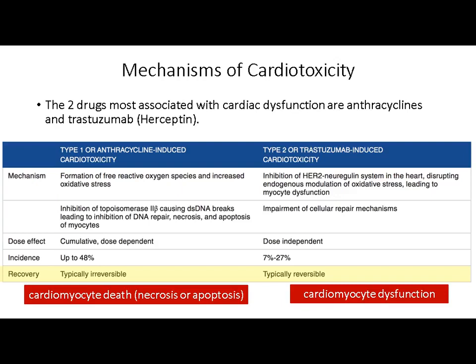We have different types of cardiotoxicity. Type 1 cardiotoxicity is induced by anthracycline. It is cumulative and dose-dependent with a very high incidence of cardiotoxicity rates. This kind of cardiotoxicity is irreversible because of cardiomyocyte death due to necrosis and apoptosis. On the other hand, type 2 cardiotoxicity is induced by trastuzumab, which is dose-independent, with lower incidence rates and typically reversible due to cardiomyocyte dysfunction.